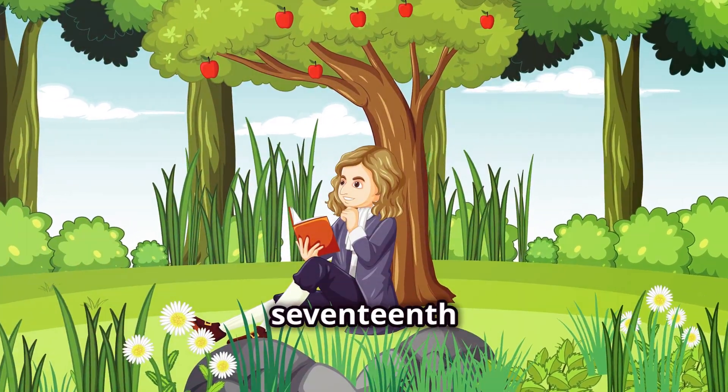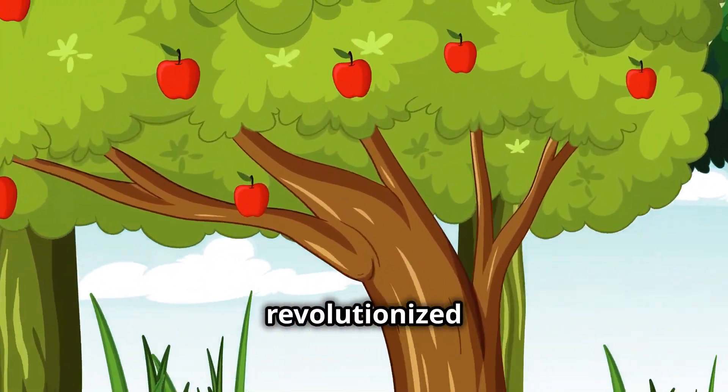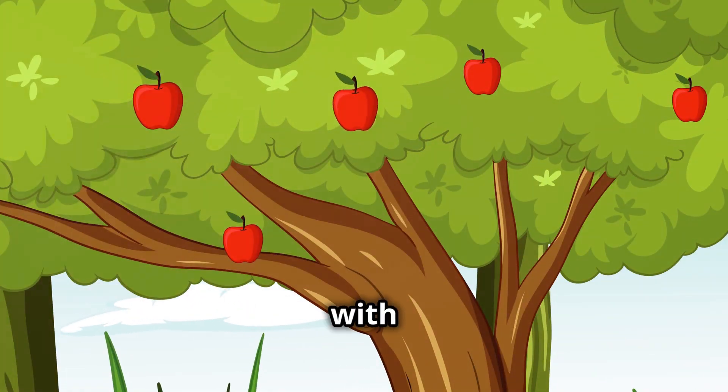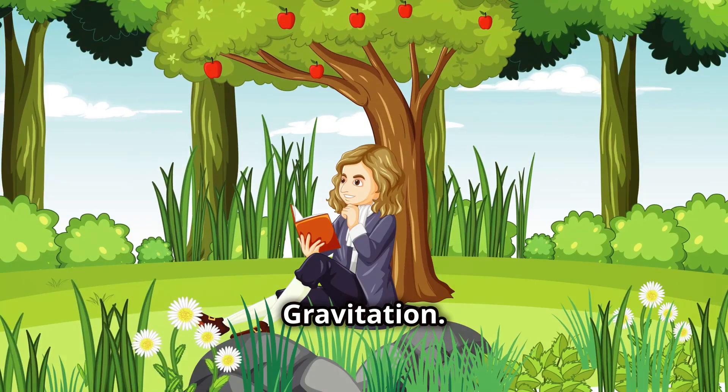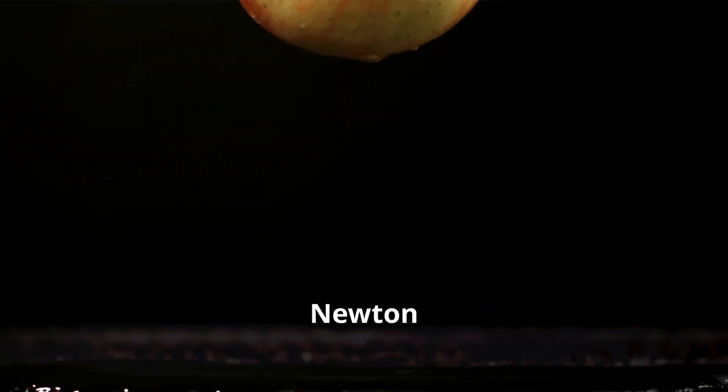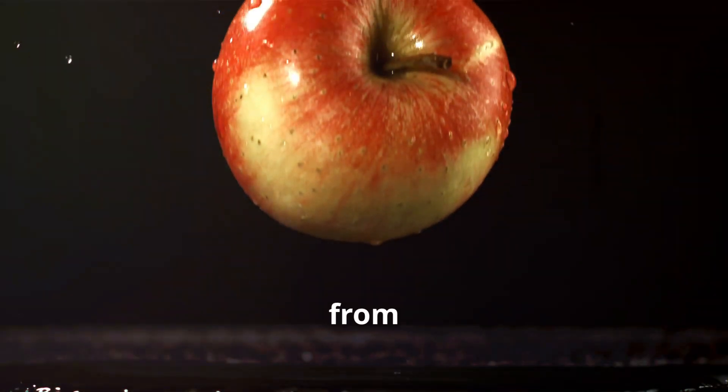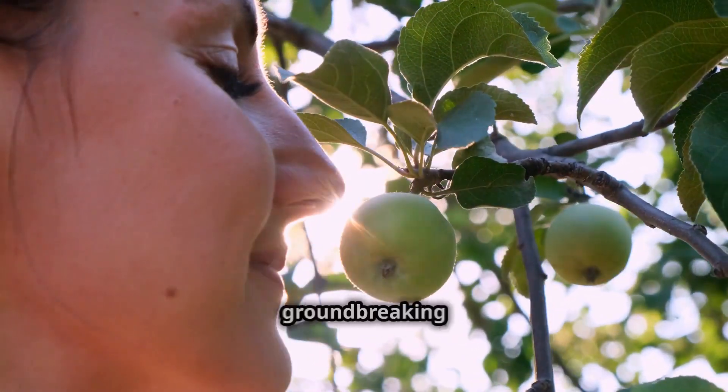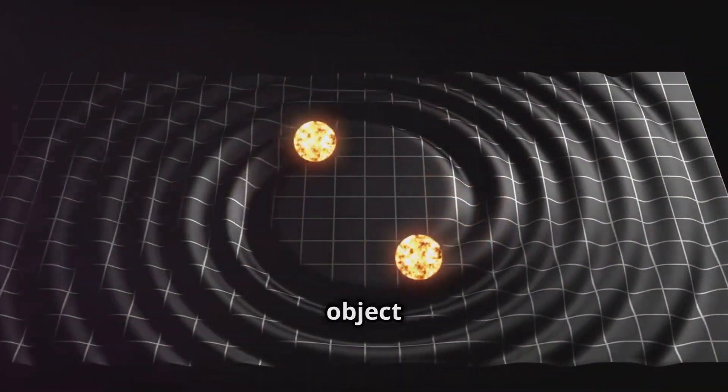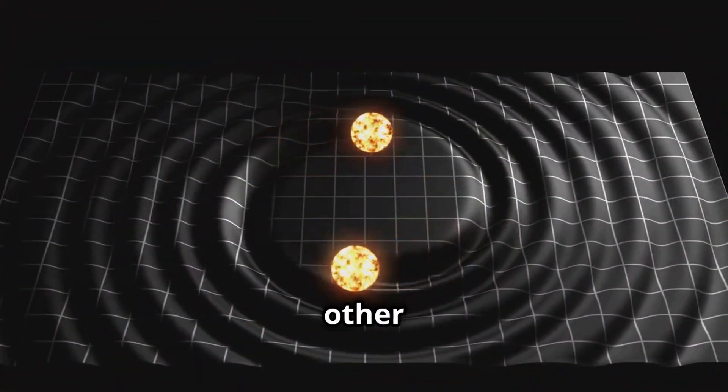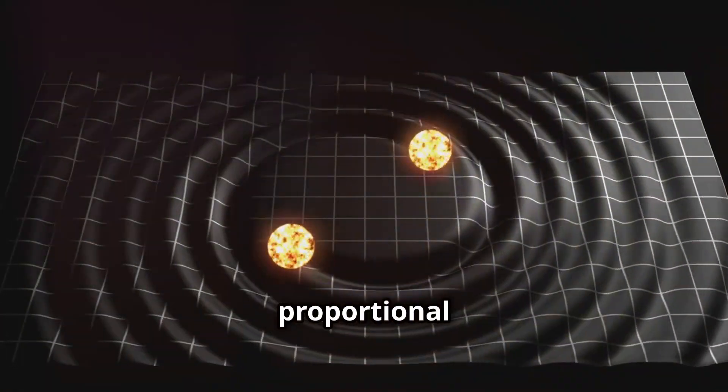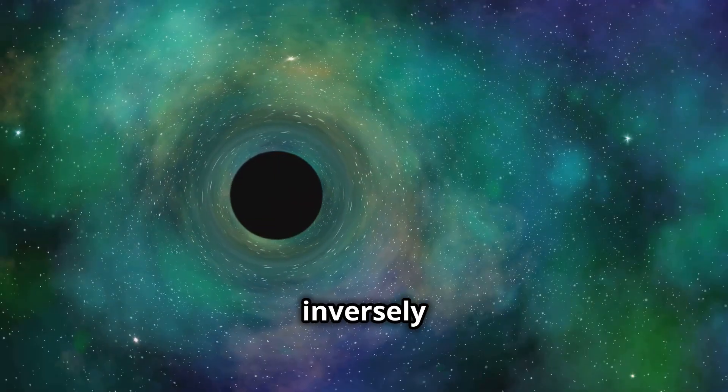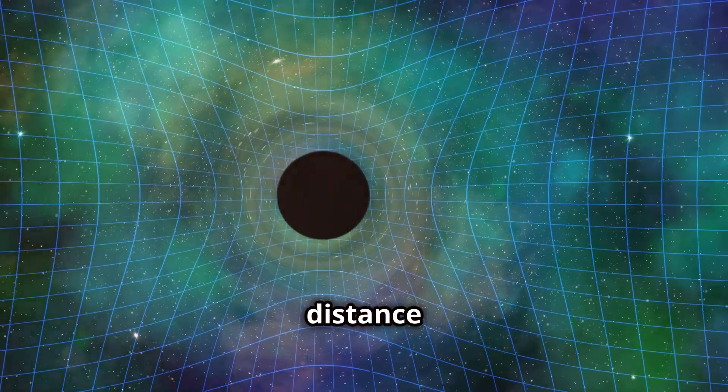In the late 17th century, Sir Isaac Newton revolutionized our understanding of gravity with his law of universal gravitation. Legend has it that Newton was inspired by an apple falling from a tree. This seemingly simple observation led him to formulate his groundbreaking theory. Newton proposed that every object in the universe attracts every other object with a force directly proportional to their masses and inversely proportional to the square of the distance between them.